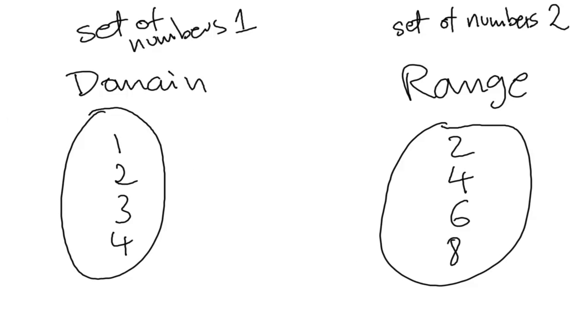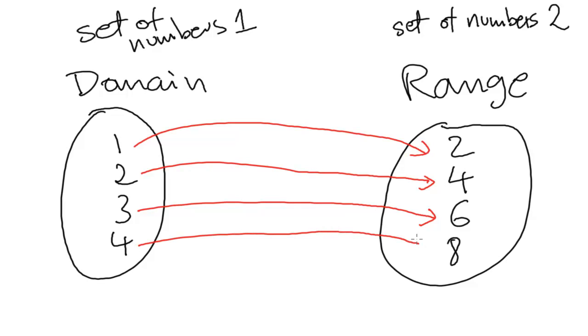So in this example you can see that 1 will be paired up with the 2, 2 will be paired up with the 4, 3 will be paired up with the 6, and 4 will be paired up with the 8. That's what it's called a relation. It's simply pairing up the numbers from your domain to the numbers in your range.